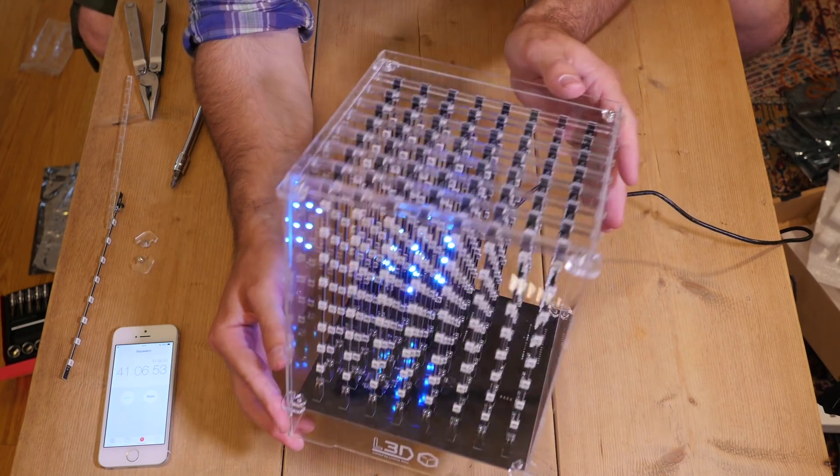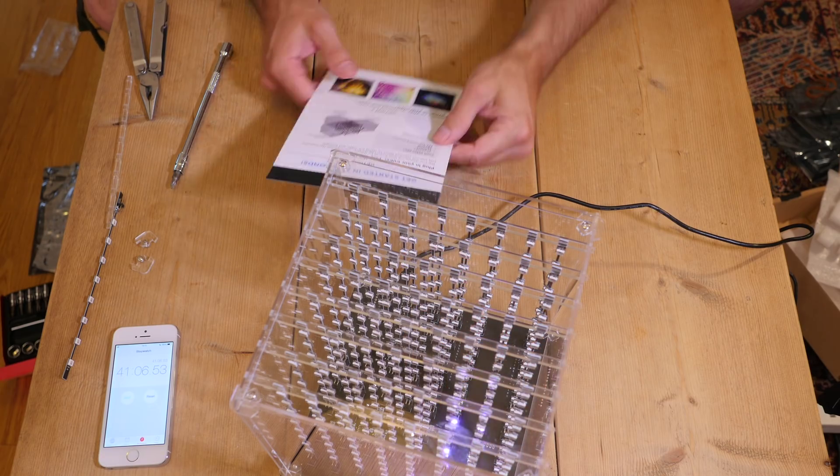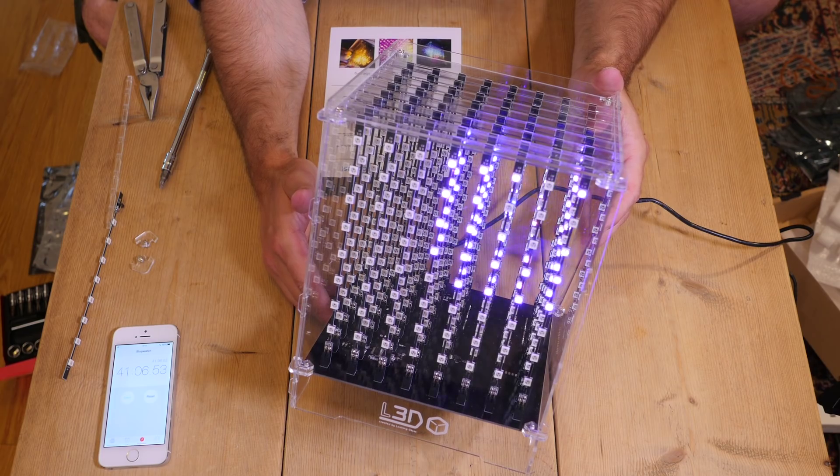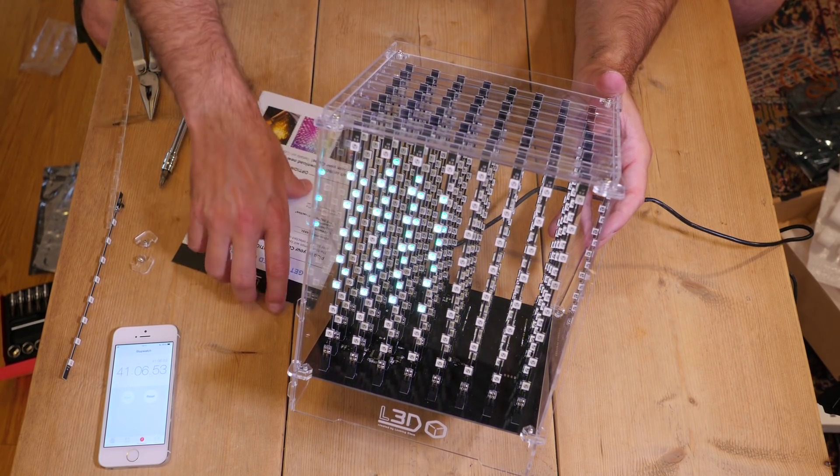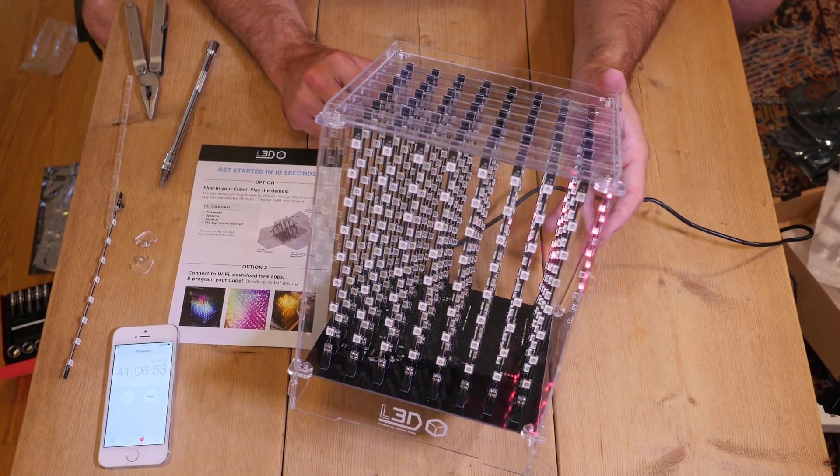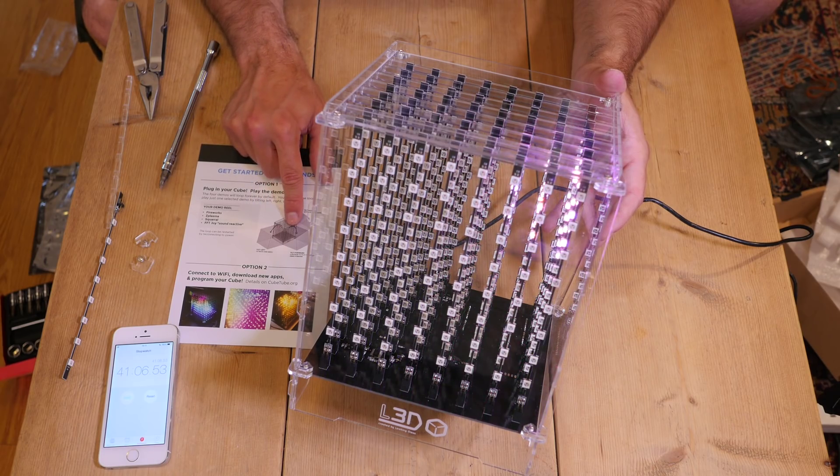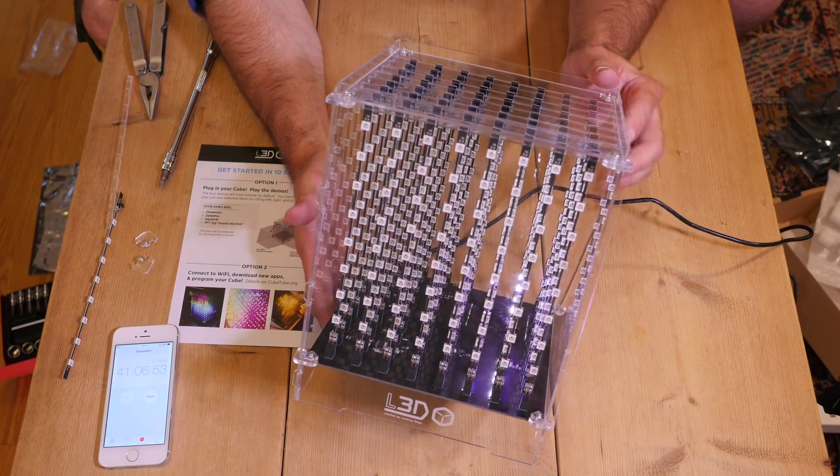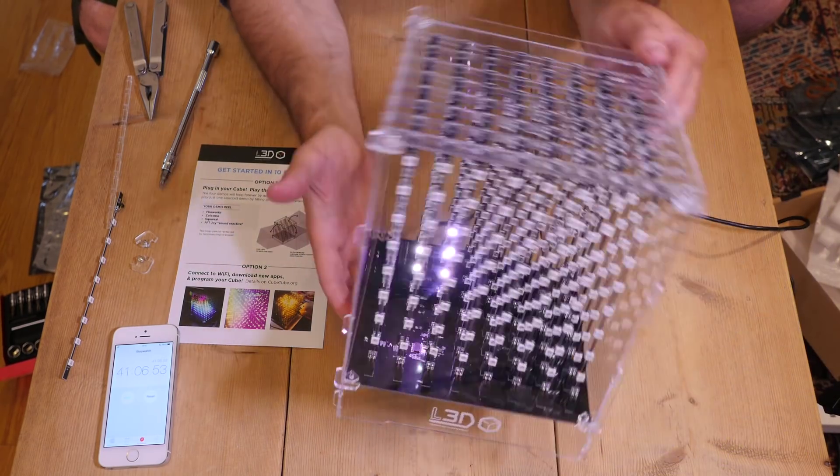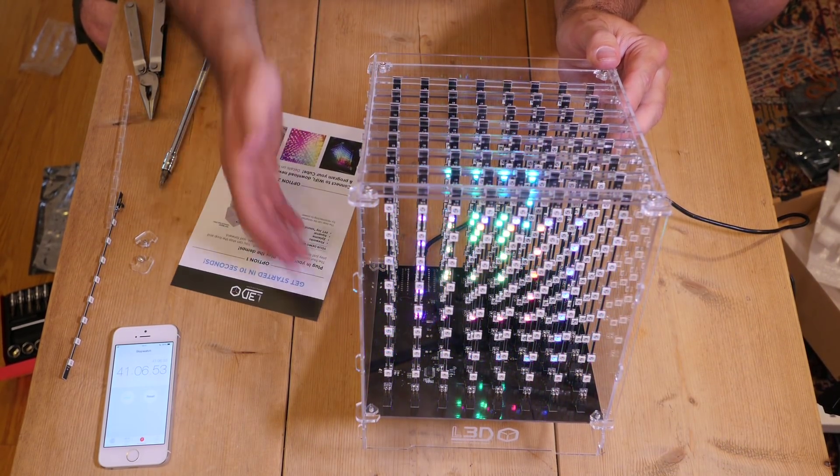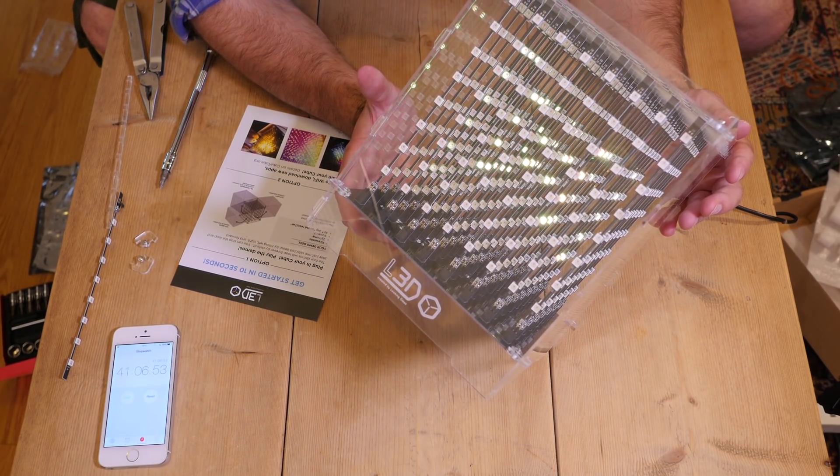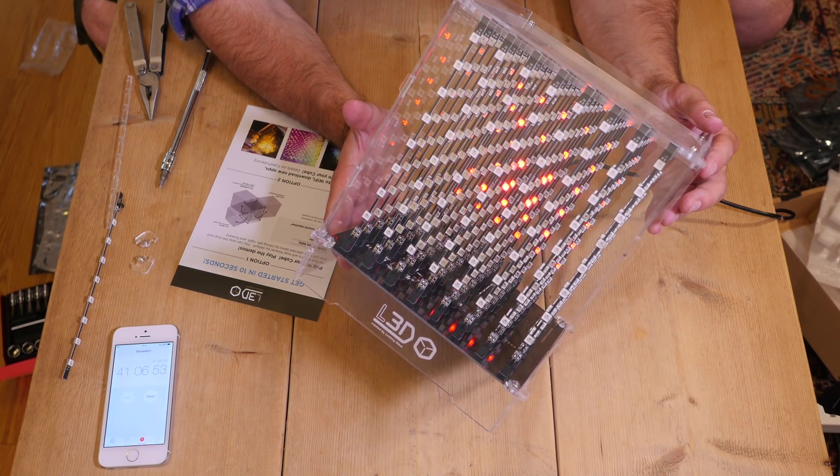I'll get some proper shots of it in a minute but I just wanted to show you what happens when you first plug it in. I was just reading this little blurb and you can actually change the modes. This is the demo reel that comes with it. You get four different looping animations and you can change what happens by tilting this thing to the left and to the right.